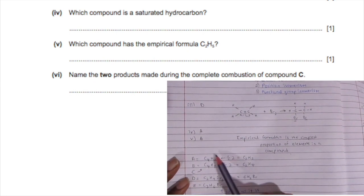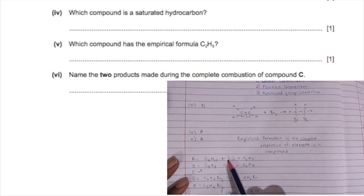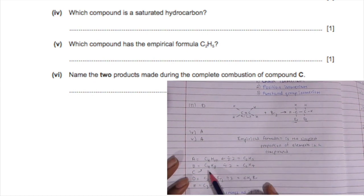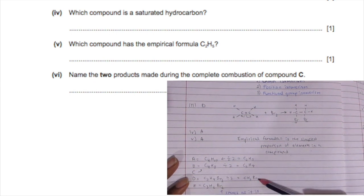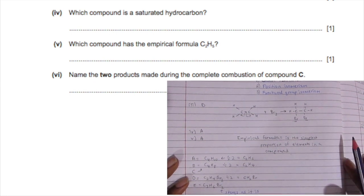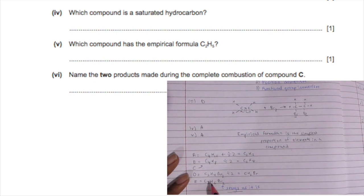For B and C, you get C2H4. For D, you get CH2Br. For E, you don't change it at all because you shouldn't have decimals or fractions, so it stays as is.